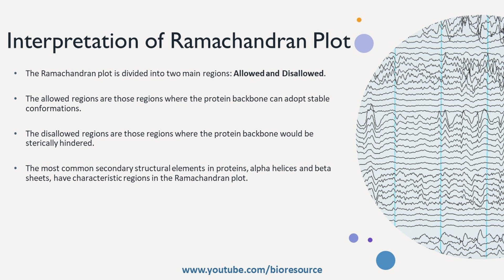The plot is populated with data points and each point represents a specific pair of Phi and Psi angles observed in the protein structure. The interpretation involves understanding the distribution of these points on the plot. Regions that are densely populated with data points represent allowed conformations — these conformations are energetically favorable and sterically feasible, meaning there is minimal steric clash or overlap between the atoms in the protein backbone.